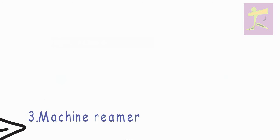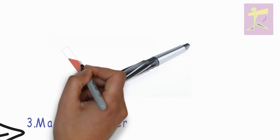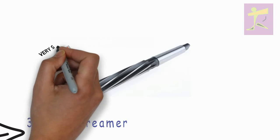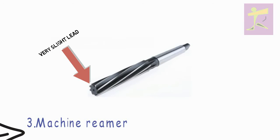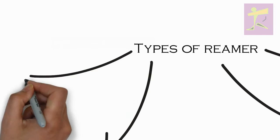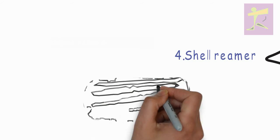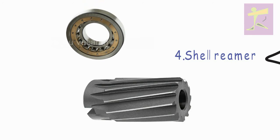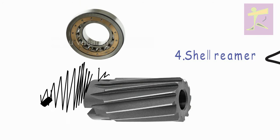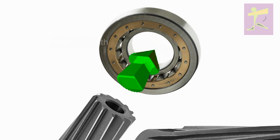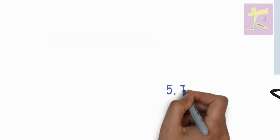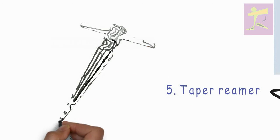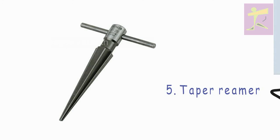3. Machine Reamer: A machine reamer only has a very slight lead-in, because the reamer and workpiece are pre-aligned by the machine, there is no risk of it wandering off course. 4. Shell Reamer: Shell reamers are designed for reaming bearings and other similar items. They are fluted almost the whole length. 5. Taper Reamer: A precision tapered reamer is used to make a tapered hole to later receive a tapered pin.